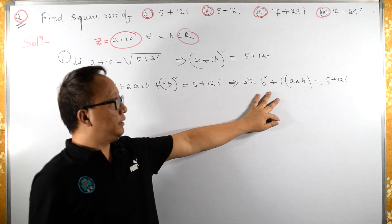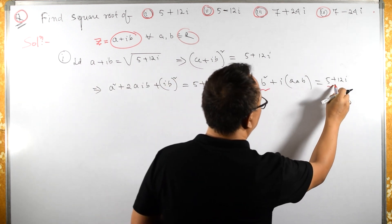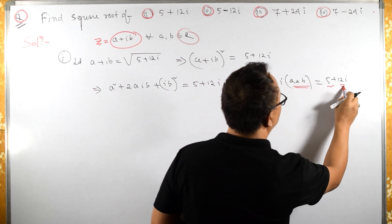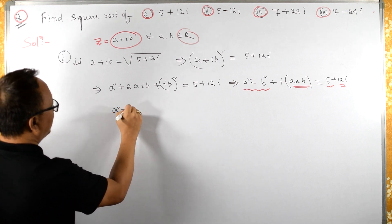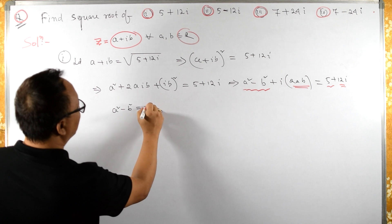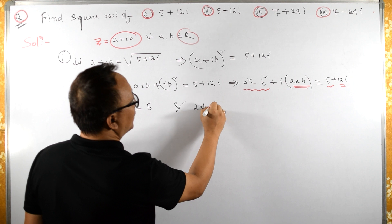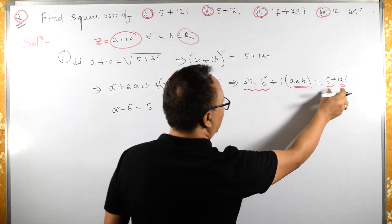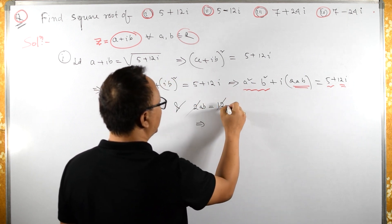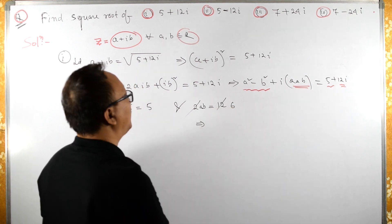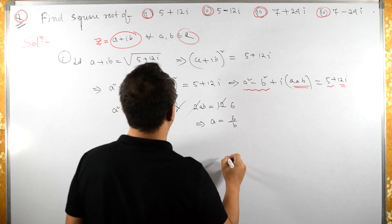Let us compare real and imaginary parts. The real part means free from i. Comparing real and imaginary parts: we have a squared minus b squared equals 5, and we have 2ab equals 12. So a equals 6 divided by b.